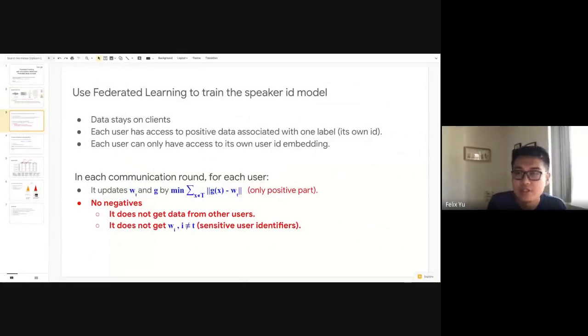In this work, we are interested in training this model using federated learning, where the data stays on the clients. In this setting, each user has access to only the positive data associated with one label, in this case simply its own user ID. The users cannot share the voice between them because voice is sensitive personal information. We also have this restriction that each user can only access its own user ID embedding in the last layer, because if one user can access other's user embedding, they can use that user embedding to identify others.